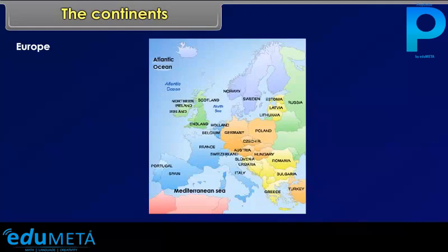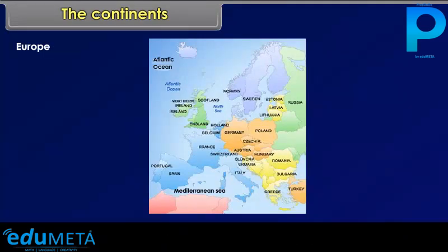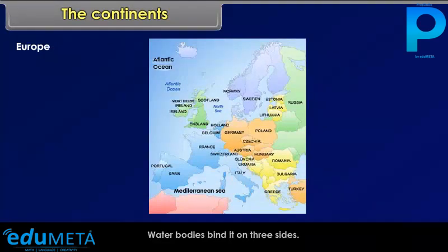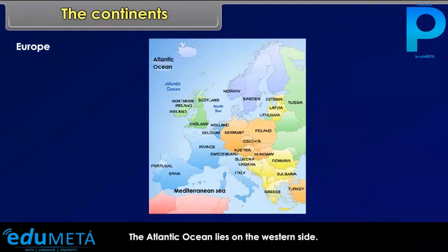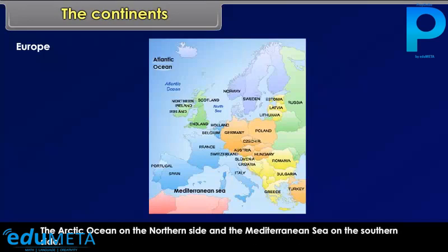Europe is the second smallest continent. Water bodies bind it on three sides: the Atlantic Ocean on the western side, the Arctic Ocean on the northern side, and the Mediterranean Sea on the southern side.